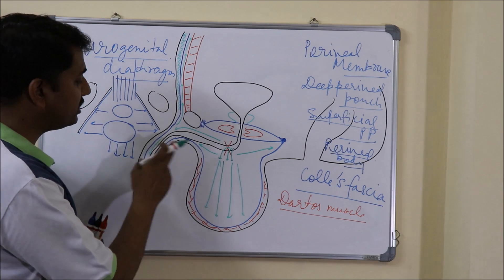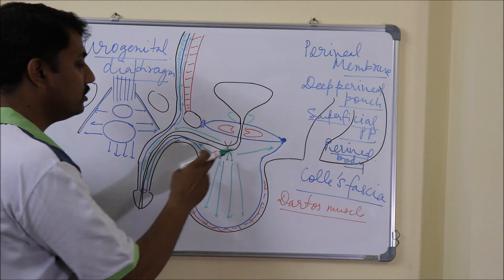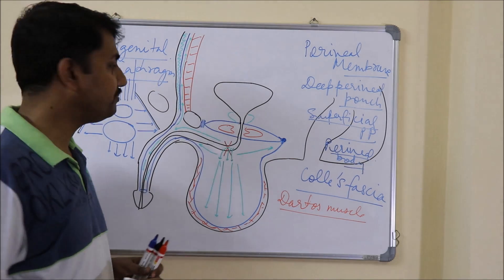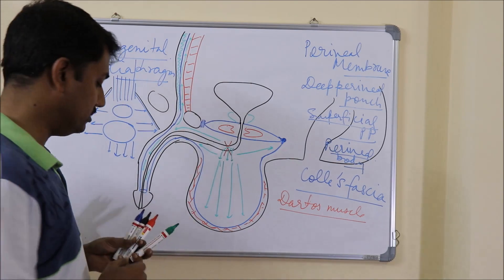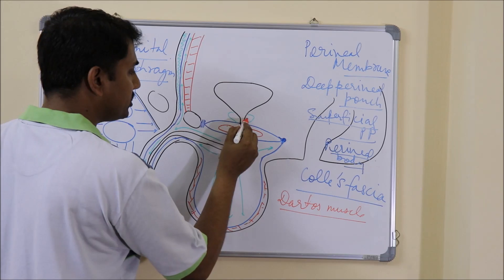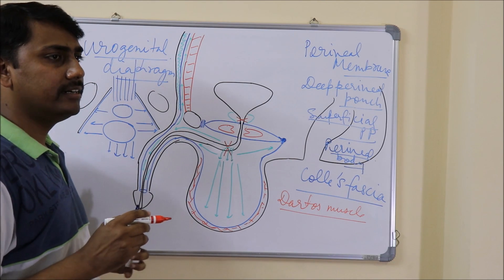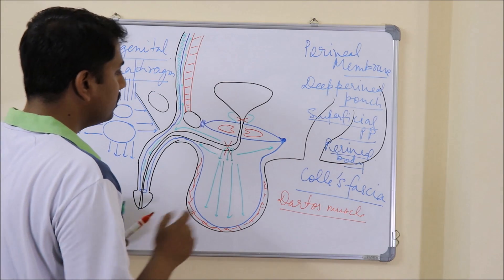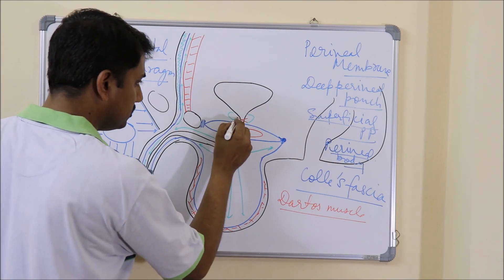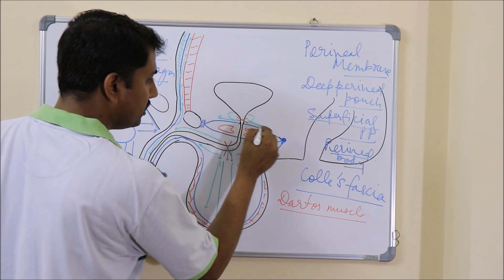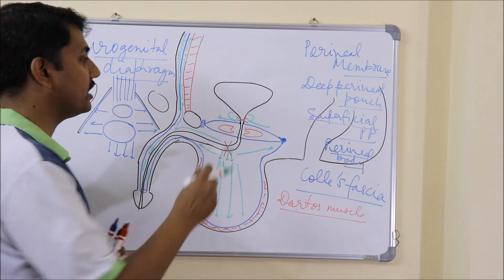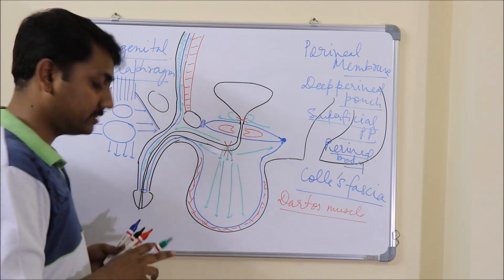Those were the sites of extravasation of urine during superficial injury in the penile part of the urethra. Now let us look at the other condition: injury in the prostatic part of the urethra, or a deeper injury. At this level the injury will occur and urine will flow out into the extraperitoneal space around the prostate and the urinary bladder.